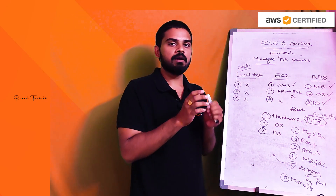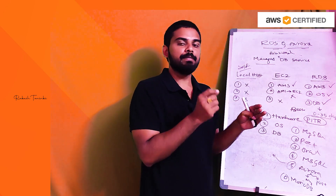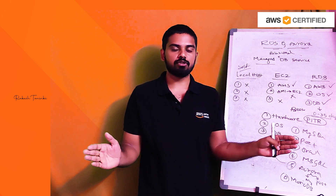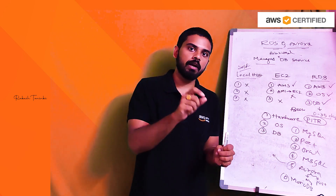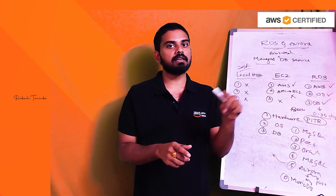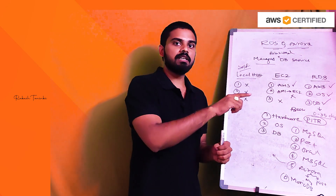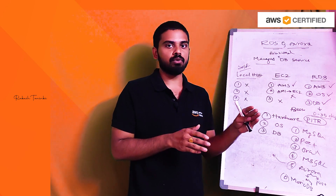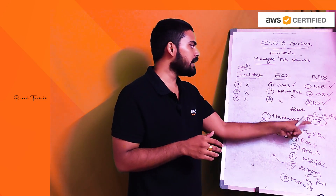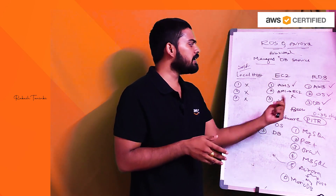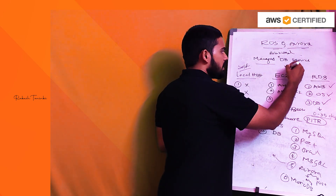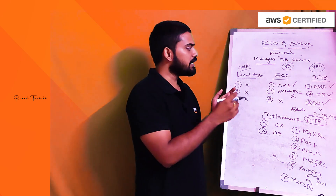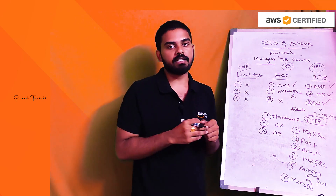For point-in-time recovery, if you have 10 days of backups, you can select the 5th day backup and recover your database to that point. You can also create a manual backup with a name and recreate from it. Like EC2 is launched within a VPC, RDS is also placed within a VPC with security groups. There are also additional options such as option groups, parameter groups, and subnet groups, which we will cover in upcoming videos.